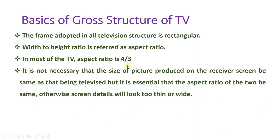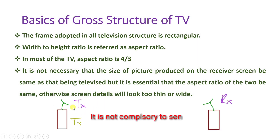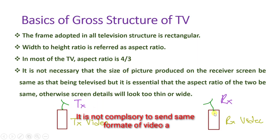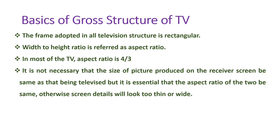There are some televisions which have an aspect ratio of 16 by 9, but most televisions have an aspect ratio of 4 by 3. It is not necessary to send a signal from transmitter to receiver with the same size, but it is essential to maintain the same aspect ratio. Otherwise, you will find images look either too thin or too wide.